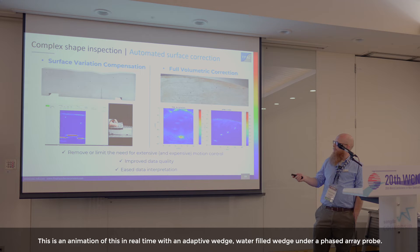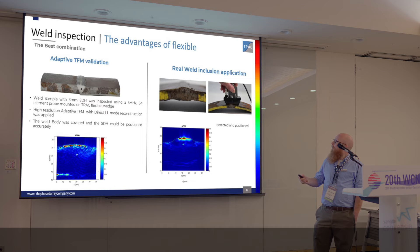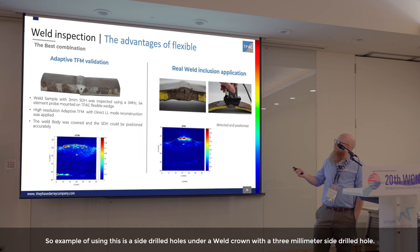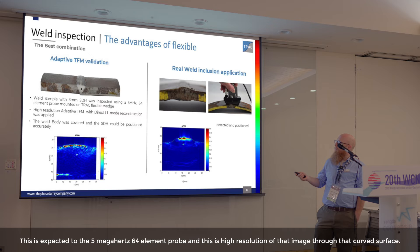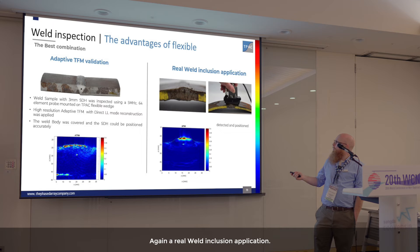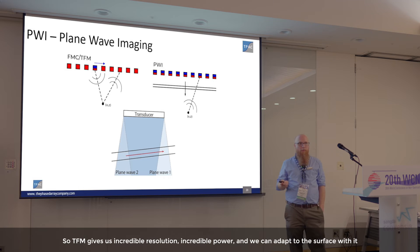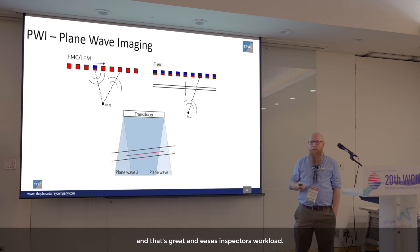This is an animation of this in real time with an adaptive water-filled wedge under a phased-array probe. As an example of using this: these are side drilled holes under a weld crown. A three-millimeter side drilled hole was inspected with a five-megahertz 64-element probe, giving high resolution through that curved surface. This is an actual flaw under a weld crown. TFM gives us incredible resolution and power, and we can adapt to the surface — greatly easing an inspector's workload.